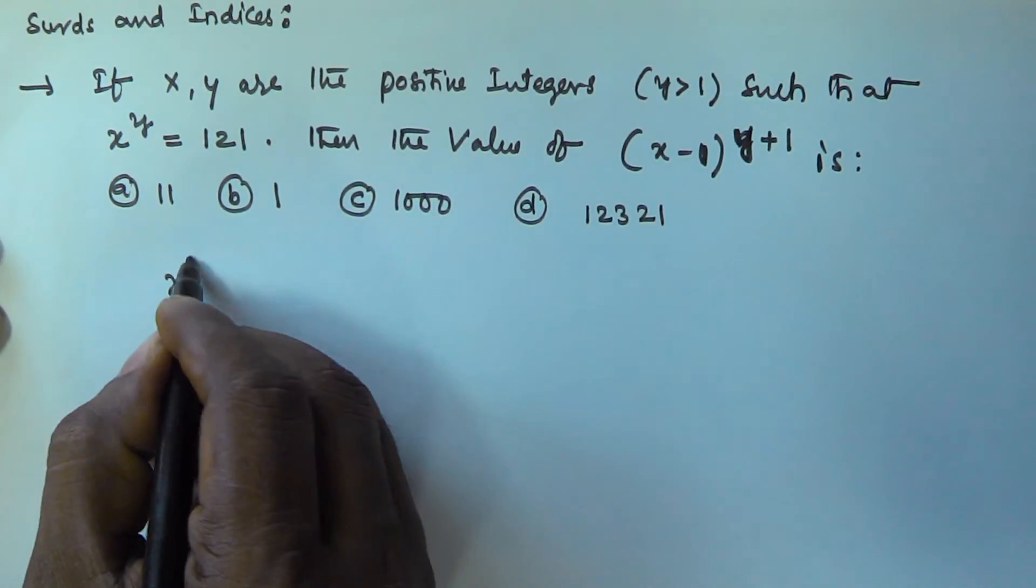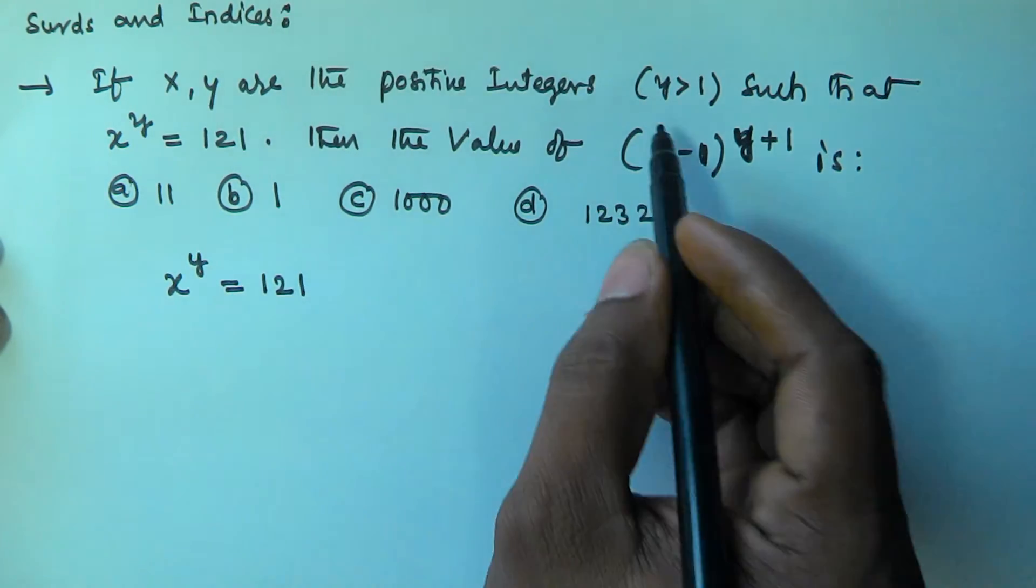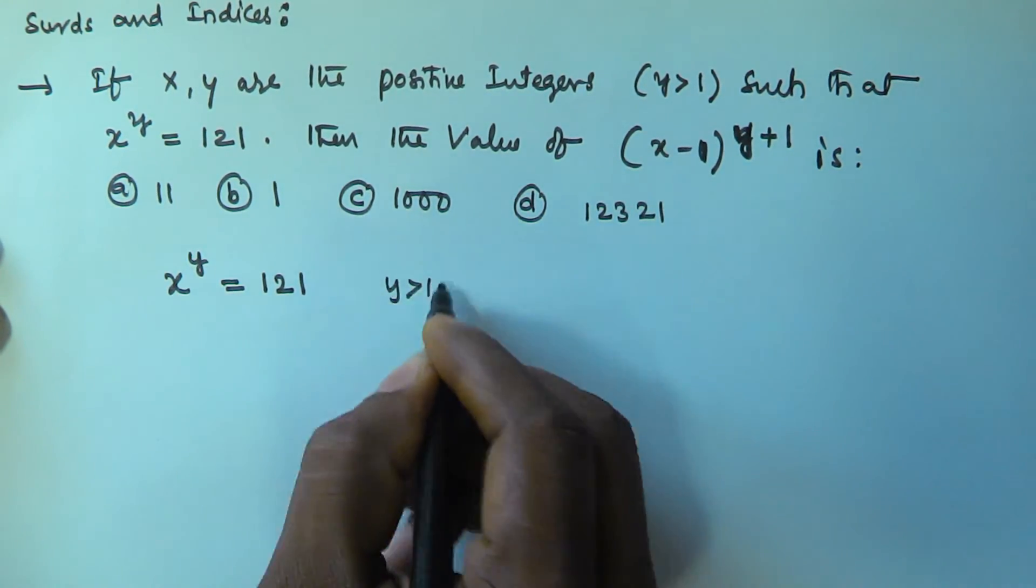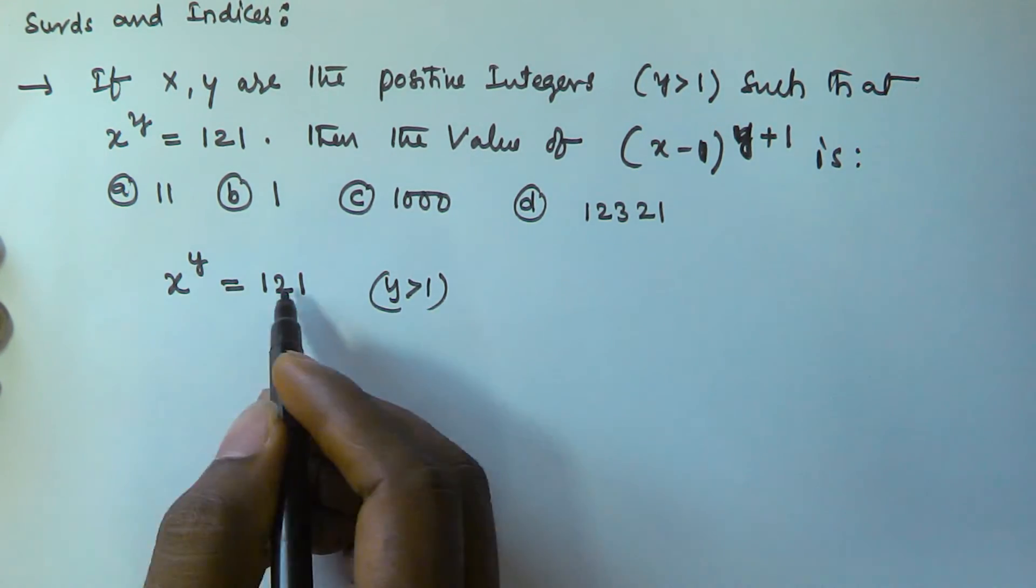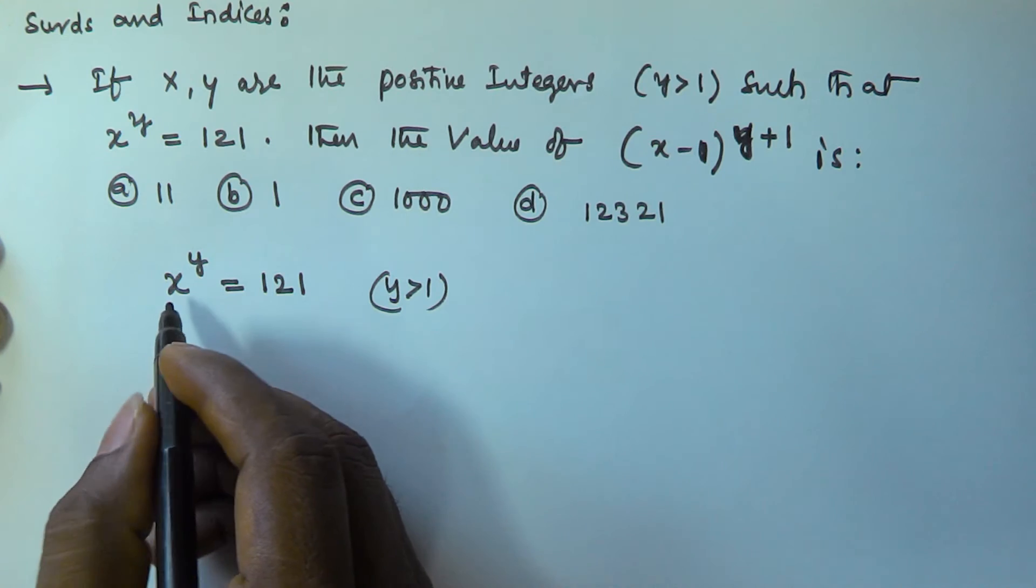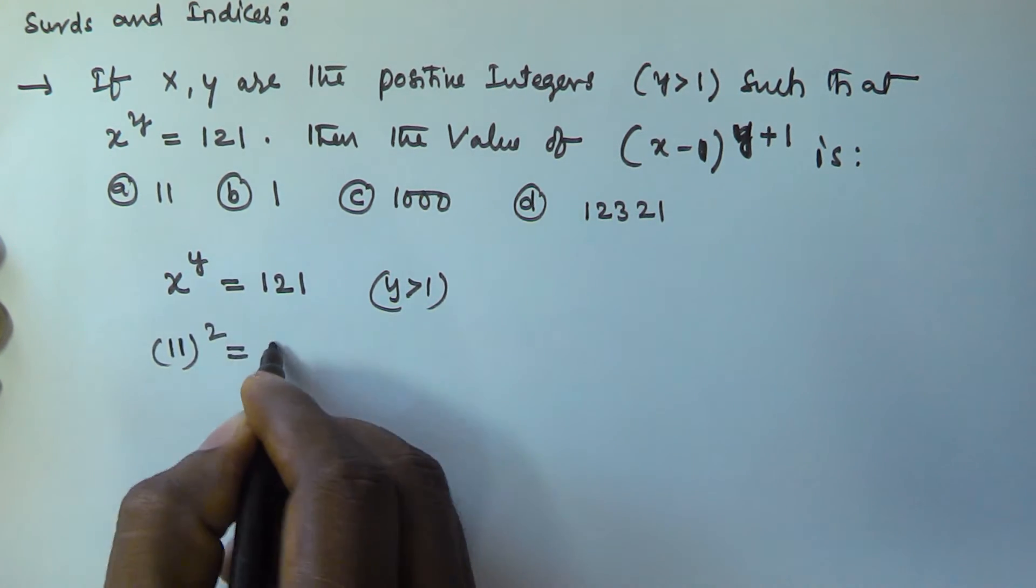It is given that x to the power of y is equal to 121, and y is greater than 1. This can be written as 11 squared is equal to 121.